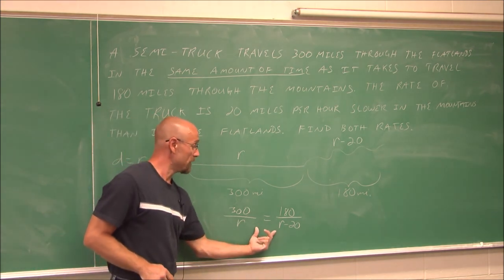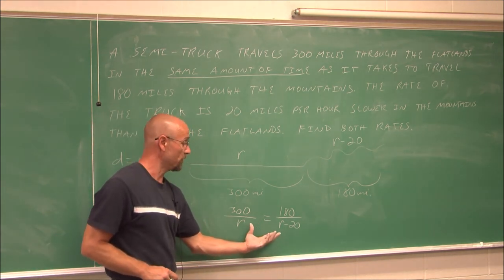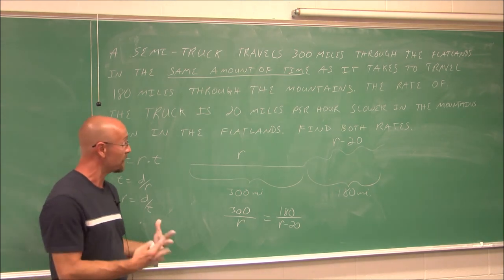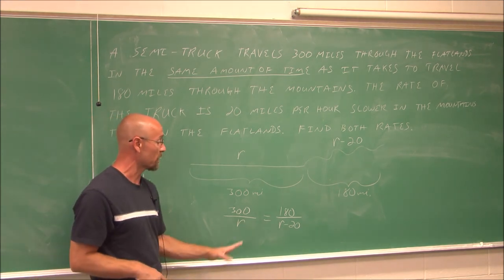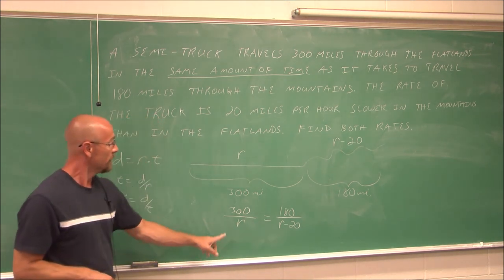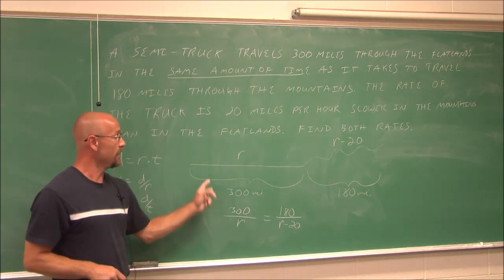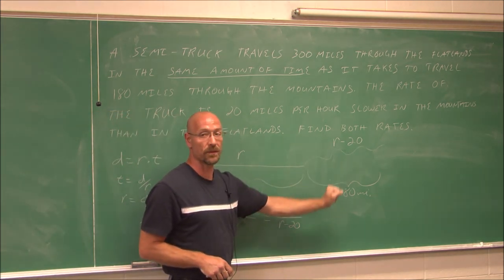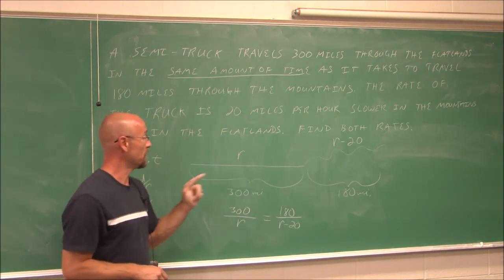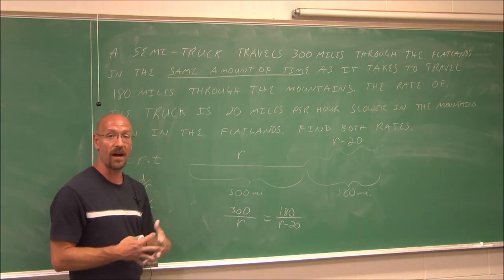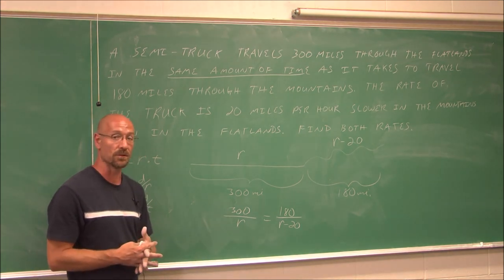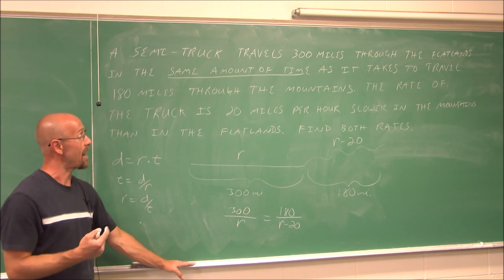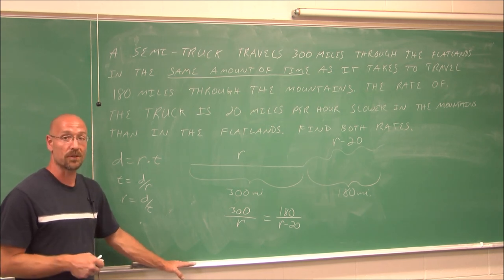I'll leave that proportion for you to solve and check your work. The rate in the flatlands is 50 miles per hour and in the mountains is 30 miles per hour. Make sure you work through this and find that solution. This has been Section 5.5, Applications. Thank you for watching.